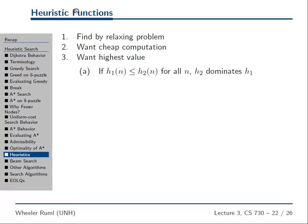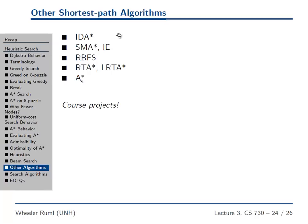Now, where do we get heuristic functions — these lower bounds on cost? There are a bunch of ways of deriving a heuristic. The main idea is something called relaxation: you find a heuristic for a problem by relaxing the problem. If you think about the sliding tile puzzle, we looked at two heuristics — tiles out of place and Manhattan distance. Manhattan distance gives a larger value while still being admissible, so it's the preferred heuristic.